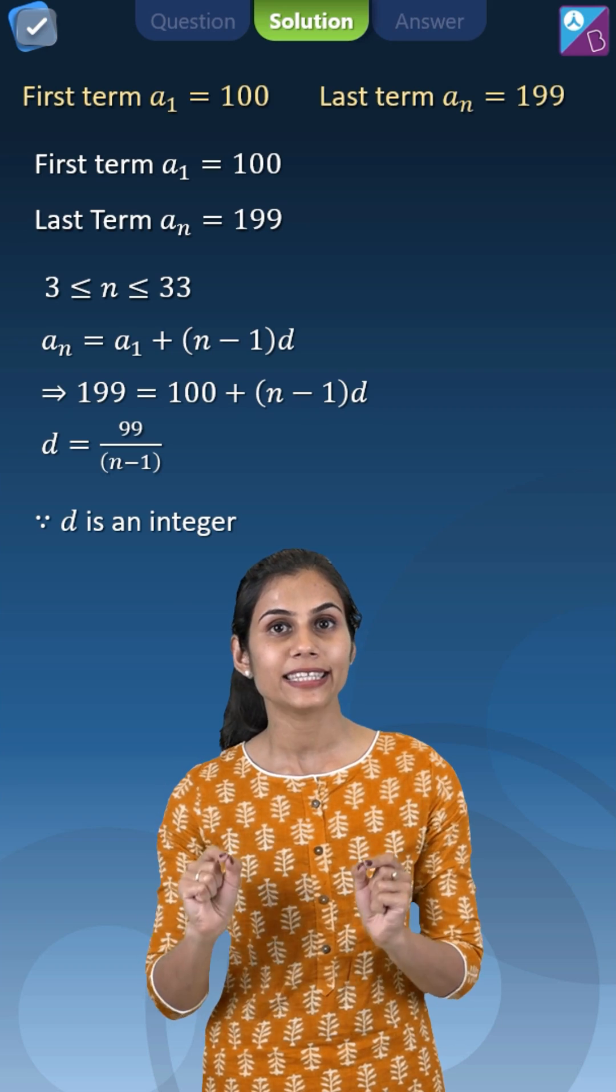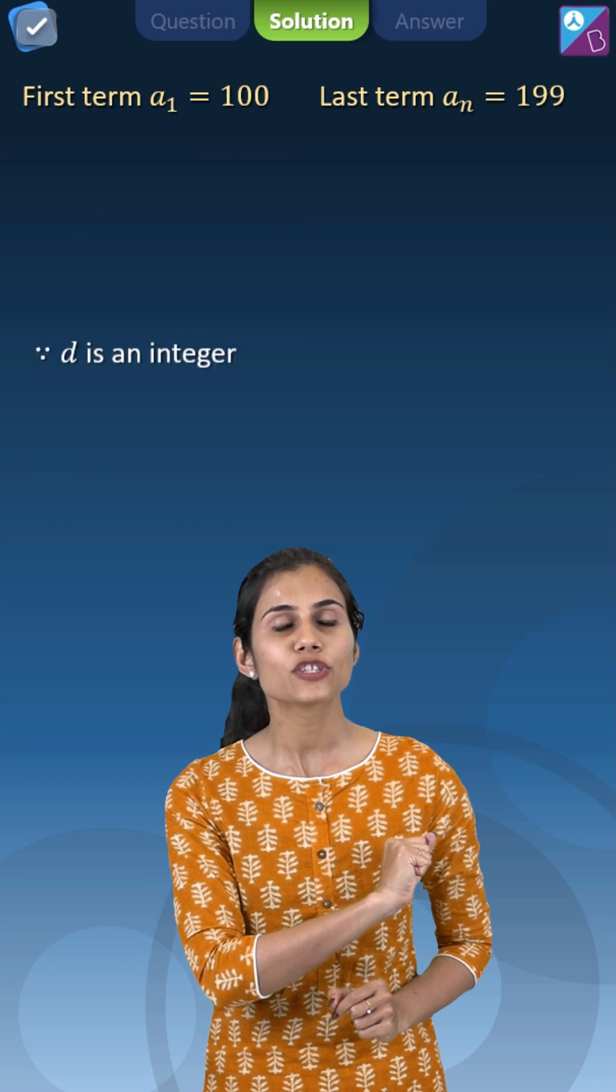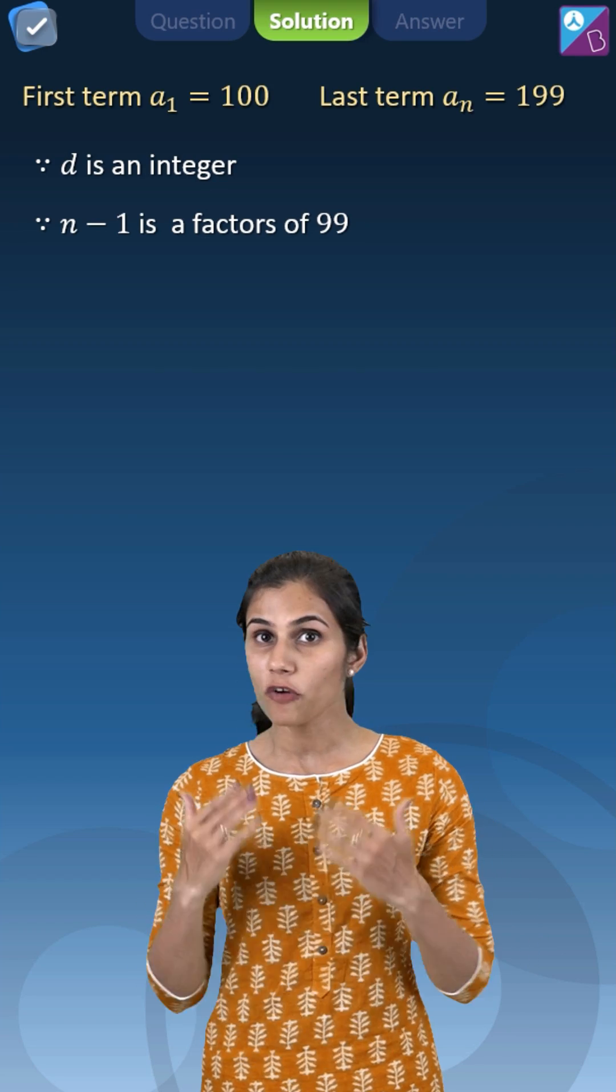Mind it, D has to be an integer. That means n minus 1 has no choice but to be a positive integral factor of 99.